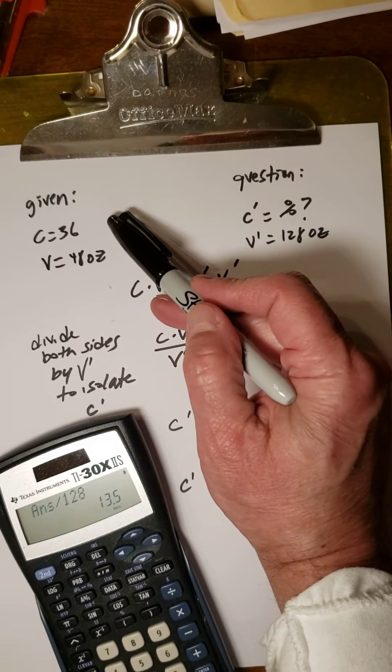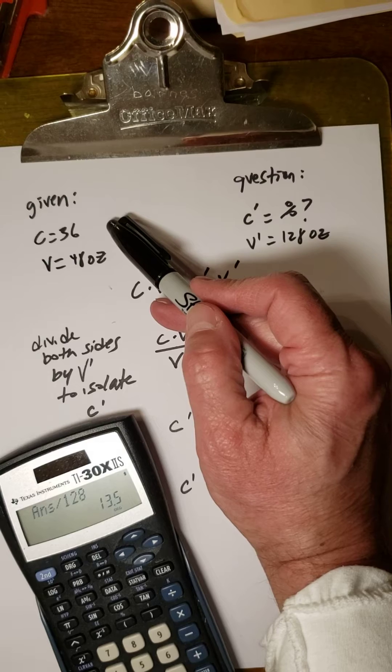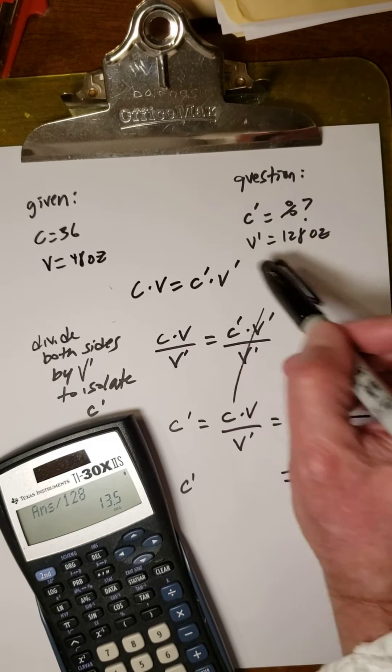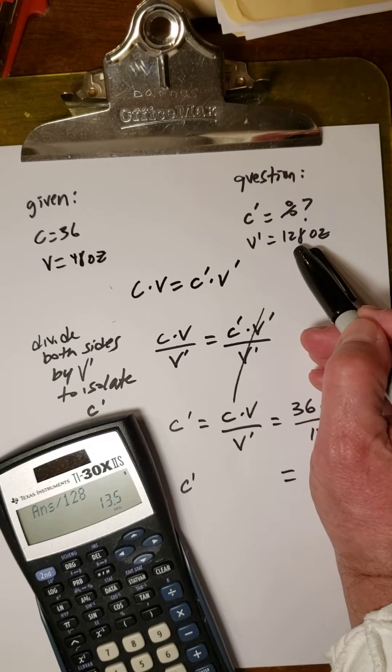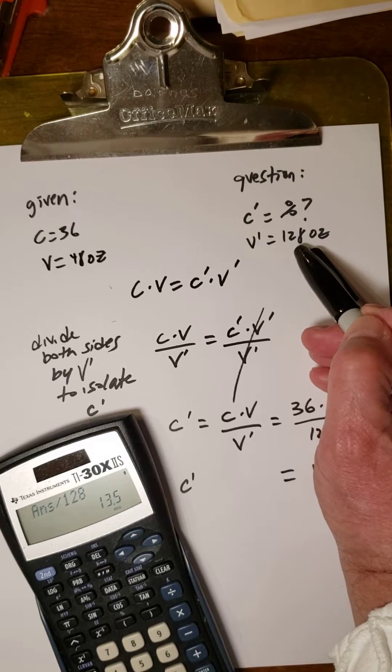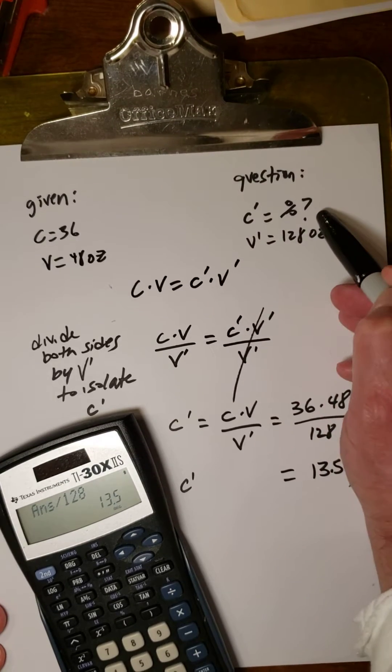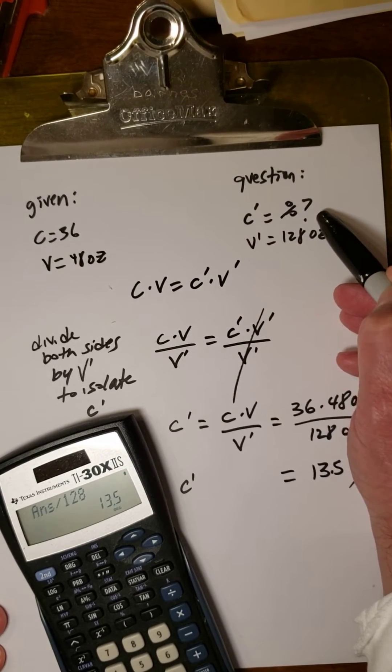If we had 48 ounces of a 36 index arterial embalming fluid and we diluted it in water till it was 128 ounces, what would be the effective formaldehyde concentration in the end?